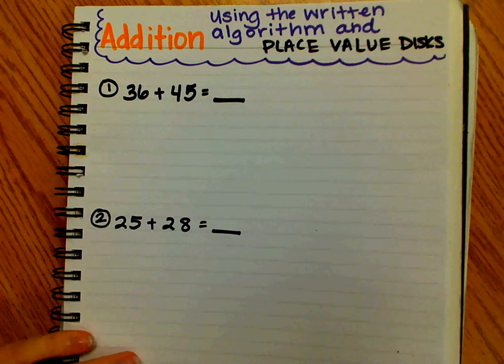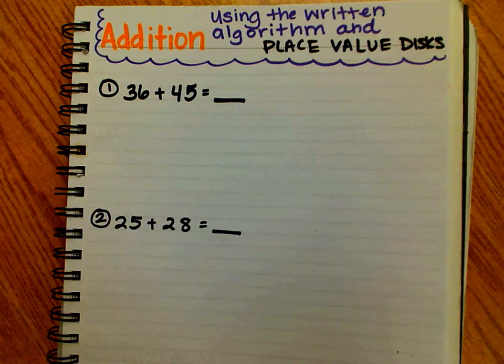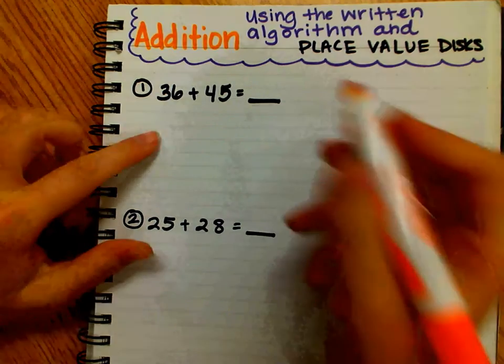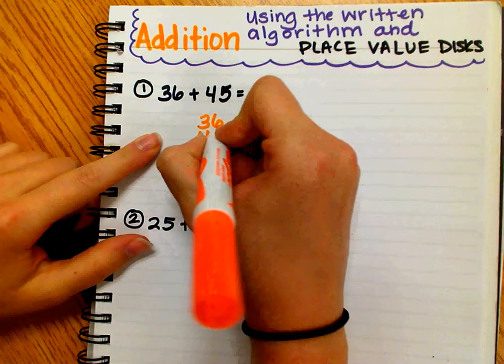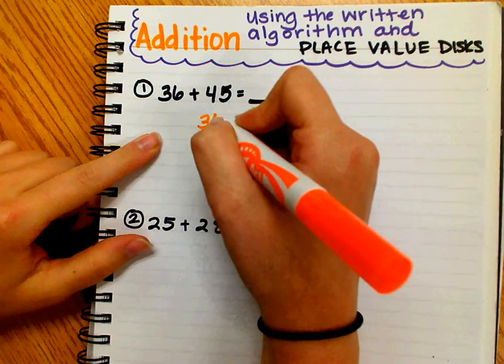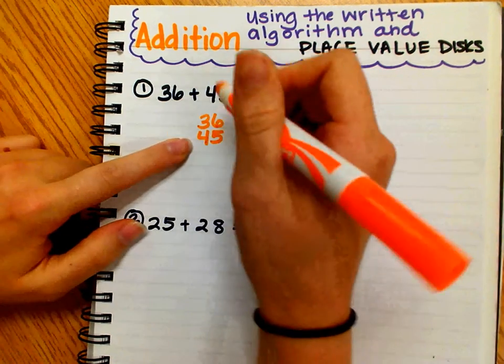Let's start with 36 plus 45. The very first thing students need to do is write the numbers vertically or stacked on top of each other. The numbers in the ones place should be in one column, and the numbers in the tens place should be in a column as well.